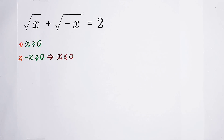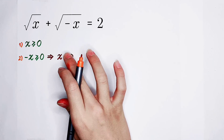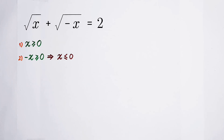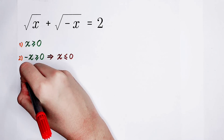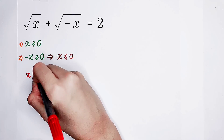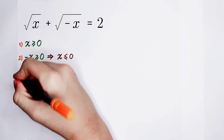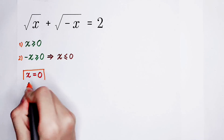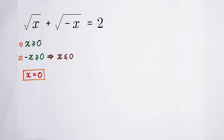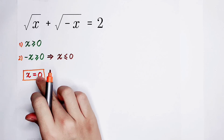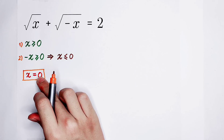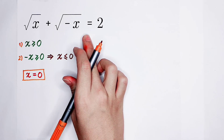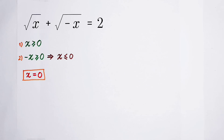What does that mean? If x is greater than or equal to 0 and at the same time it should also be smaller than or equal to 0, that means x is equal to 0. But if you substitute x equals 0 into our original equation, you find that 0 plus 0 is not equal to 2.